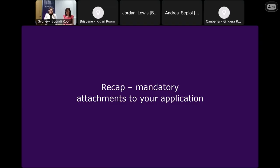That was a comprehensive run-through of the navigation of the application form. We'll now recap the mandatory attachments. As per grant guidelines section 6.4.1 for T1 and the sample application form, there are seven areas that stipulate attachments are required. To ensure you have the correct number of documents, we'll take you through the requirements for each eligibility criterion and the number of documents required for upload. Note that the plan to market is no longer a separate attachment — its content is to be added into the individual sections within the application form.